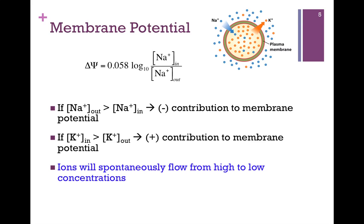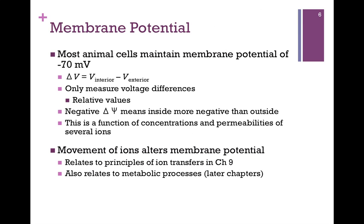Ions spontaneously flow from high to low concentrations. Most animal cells maintain a membrane potential of around minus 70 millivolts. We can't measure an absolute value of voltage — all we can do is measure a difference. In this case, the delta V, or voltage difference, is interior minus exterior. A negative delta psi — a negative membrane potential — means that the inside of the cell is more negative than the outside. This is a function of the concentrations and permeabilities of several ions. We're focusing on sodium and potassium, but any ions present that participate in a concentration gradient will influence this membrane potential.